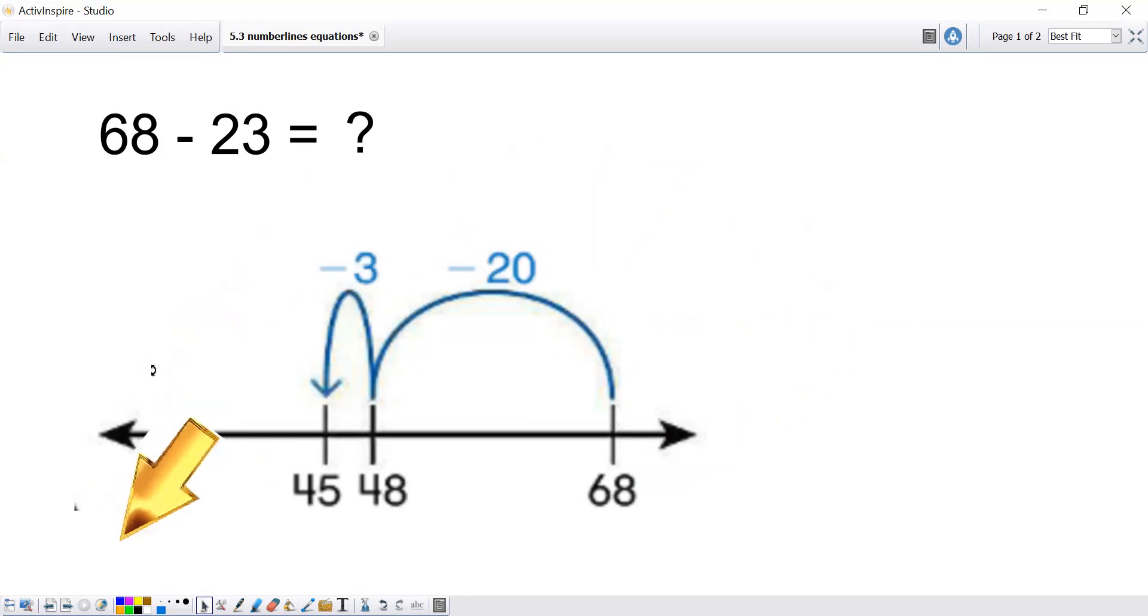Now the last part of the equation is showing me the number 45 and 48. But I'm going to pay attention to 45 because that's where this equation stops. On 45, it shows me how 68 decreased and changed to become 45. So now I know my equation is 68 minus 23, 20 and then 3, is equal to 45.